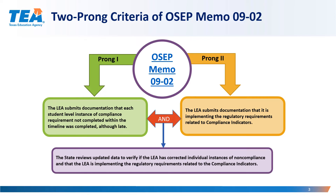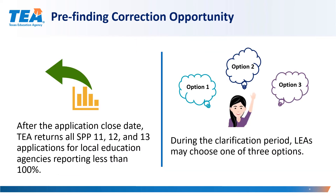The state will review the documentation prior to issuing a finding. After the SPP application close date, all SPP 11, 12, and 13 applications are returned for LEAs reporting less than 100%. At that time, LEAs may choose from three options.